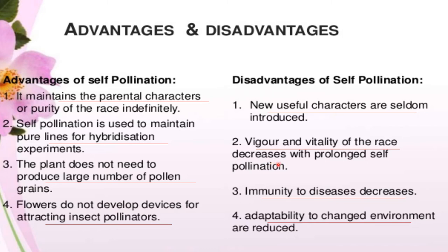A further advantage of self pollination is that vigor and vitality of the race decrease with prolonged self pollination, and the plant does not need to produce large numbers of pollen grains. Disadvantages include: immunity to disease decreases, flowers do not develop devices for attracting insect pollinators, and adaptability to changing environments is reduced.